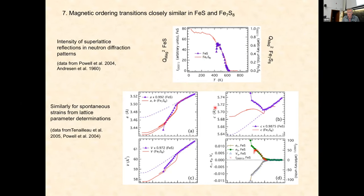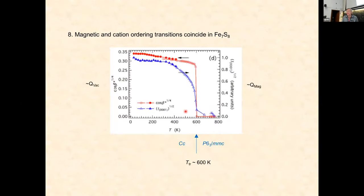If you do the same for the lattice parameters, here's volume and c, essentially the same. So we have significant coupling of the magnetic order parameter with strain. We get a lattice distortion in FeS and Fe7S8 that's basically the same.